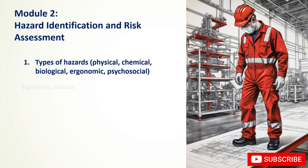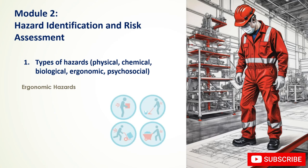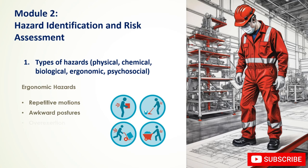Ergonomic hazards arise from the design and arrangement of workplaces, equipment, and tasks, and can lead to musculoskeletal disorders. Examples include repetitive motions causing strain on muscles, tendons, and nerves; awkward postures; overexertion from excessive force or lifting; vibration; and static loading from maintaining the same position for extended periods.